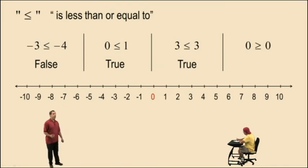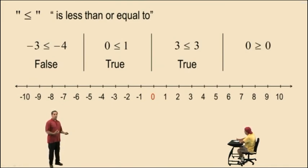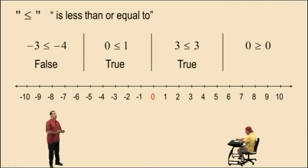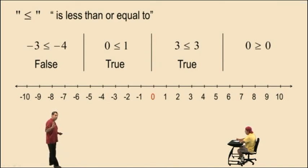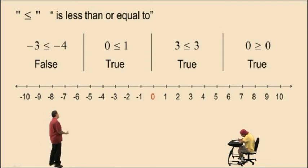Again, you have two choices here. Is 0 greater than 0? No. Is 0 equal to 3? Yes. So one was a no, one was a yes. With 'greater than or equal to,' you have two choices — as long as one of them is yes, your statement is true. It's a little tricky there.